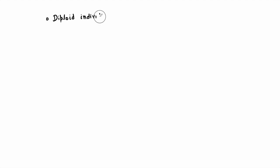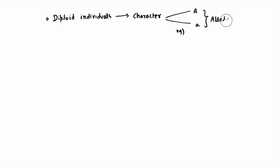Everybody knows that the concept of Hardy-Weinberg equilibrium is basically valid for diploid individuals. When we say diploid individuals, we are considering two alleles for a particular character — a dominant allele and a recessive allele. So when we write p + q = 1, we are referring to a condition called allelic frequency equilibrium, where small p refers to the allelic frequency of the dominant allele.